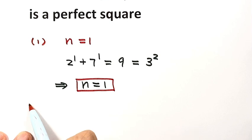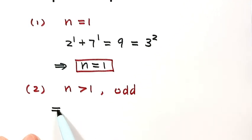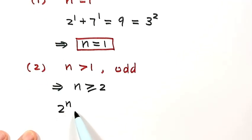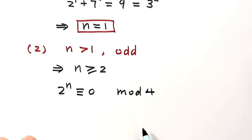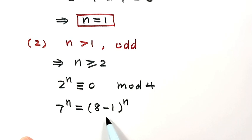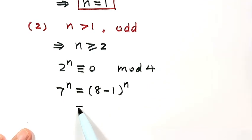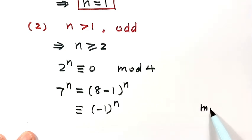Now the second case: when n is greater than 1 and n is an odd number. Because n is greater than 1, that means n is greater than or equal to 3. For 2 to the power n, it has a factor of 4, so the remainder is 0 when divided by 4. Now for 7 to the power n, we can write 7 as 8 minus 1, then raise it to the power n, and use the binomial formula to expand.